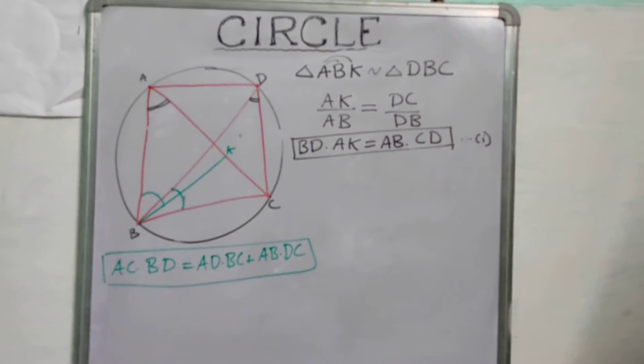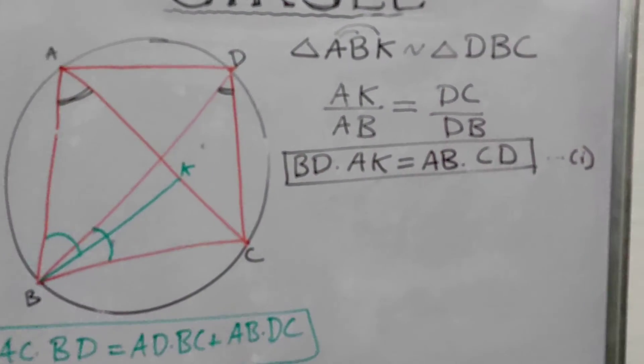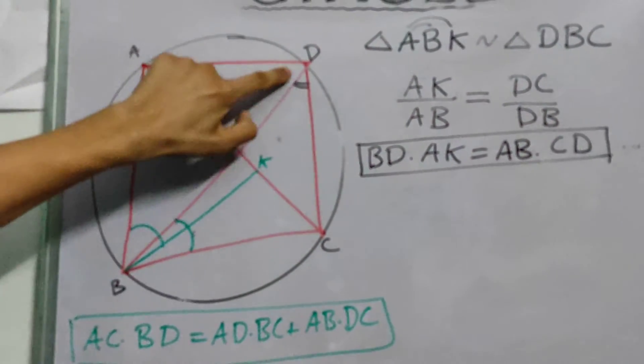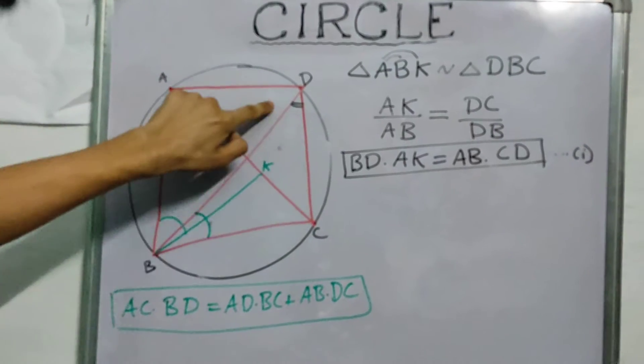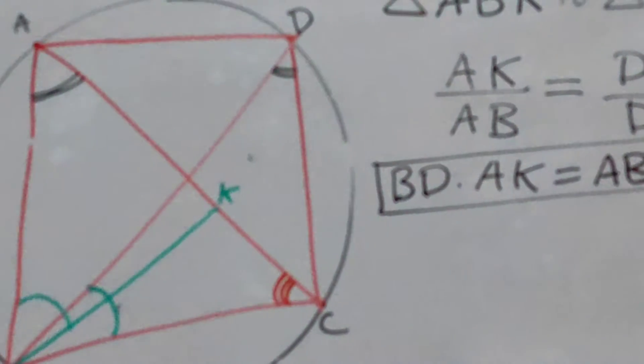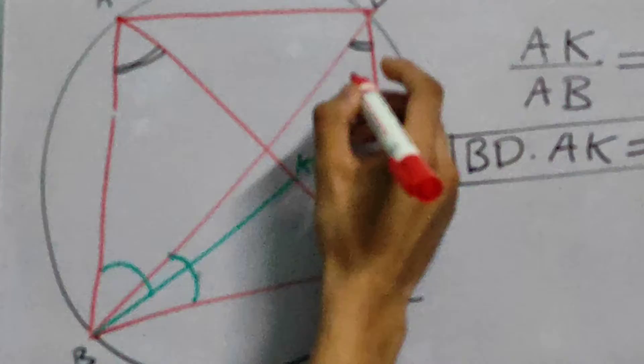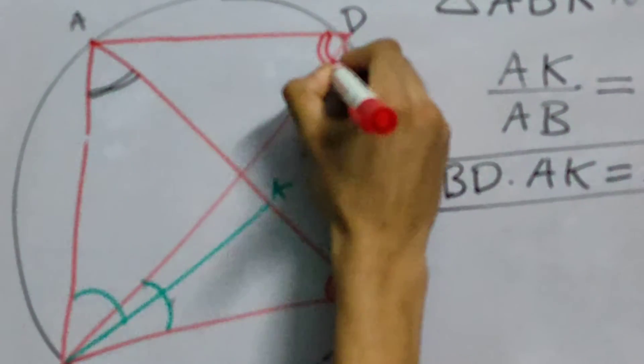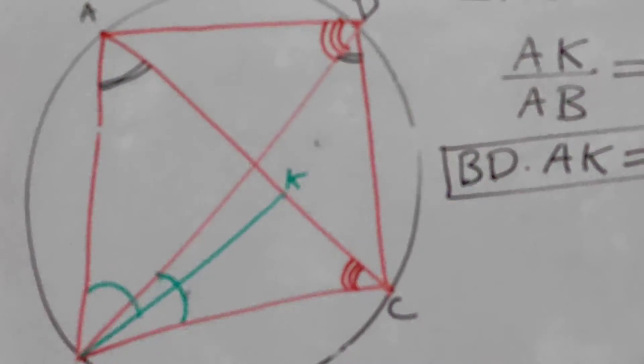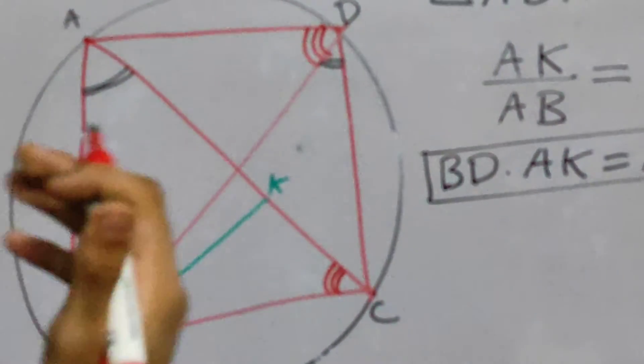Now let's look at another triangle. So if you notice these two triangles, these two angles, let me mark them again. This one, DBC, and this one. I marked it the same color.